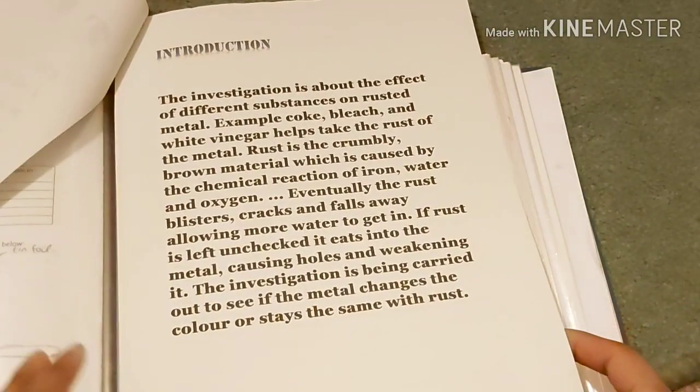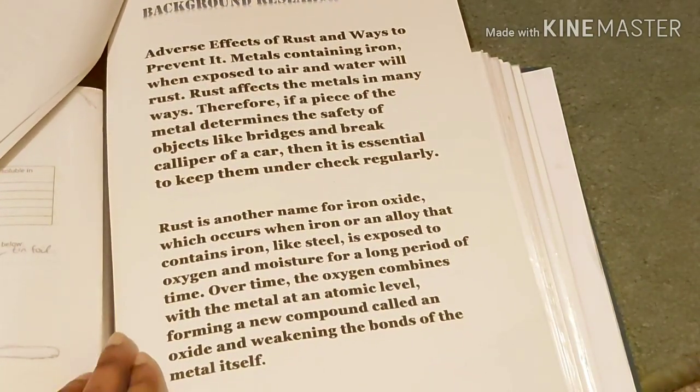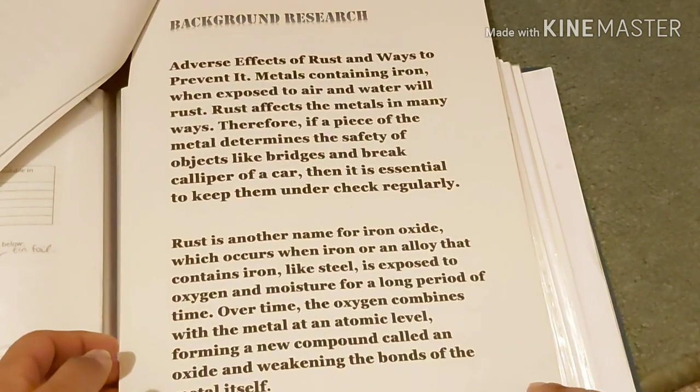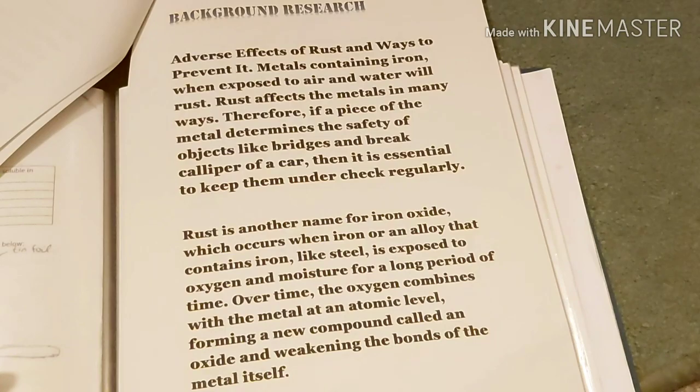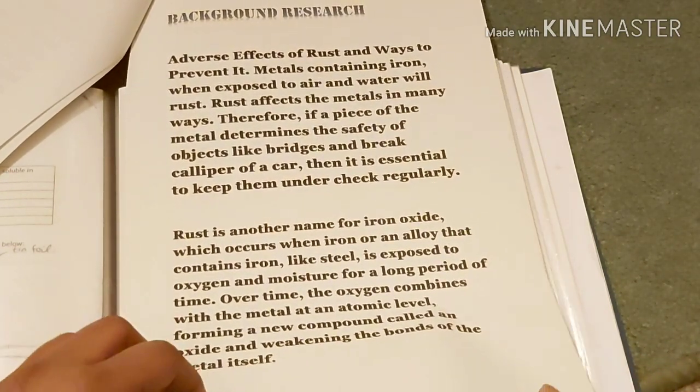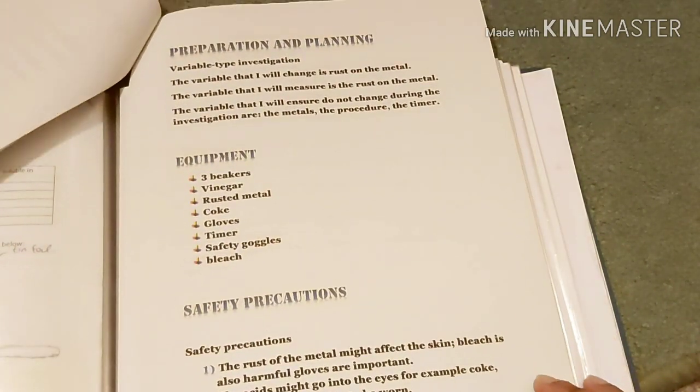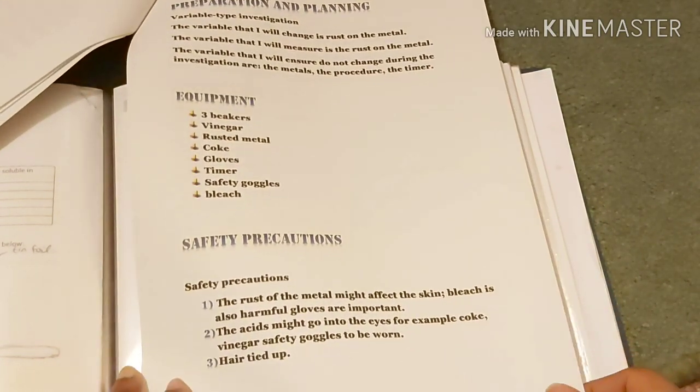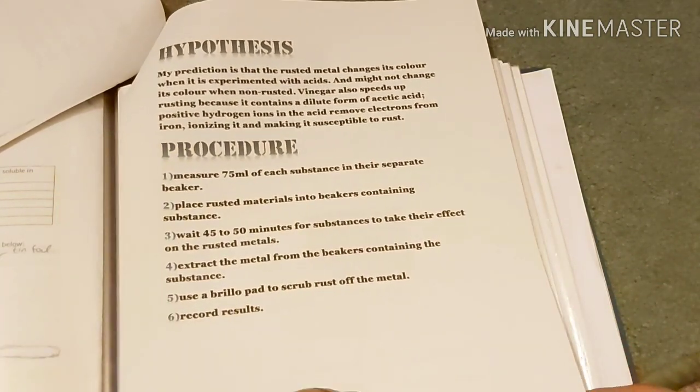That's the introduction of my CBA. The investigation is about the effect of different substances on rusted metal. For example, coke, bleach, white vinegar helps take the rust off the metal. Rust is the crumbly brown material which is caused by the chemical reaction of iron, water and oxygen. That's my background research - I'm not going to read this, it's very long. That was my background, and the preparation and planning of my CBA and the equipments. I have the pictures of the equipment. The next pages are hypothesis and the procedure of the CBA.